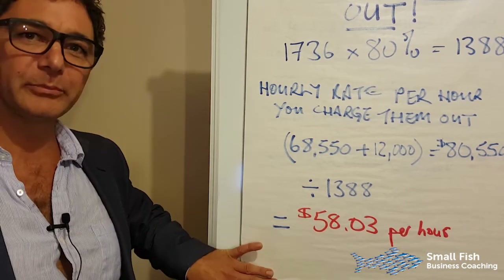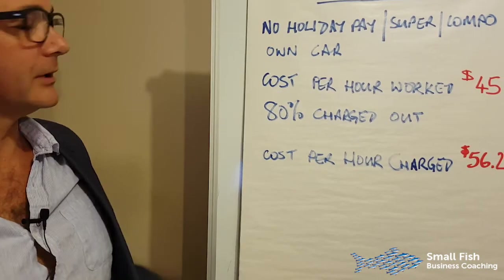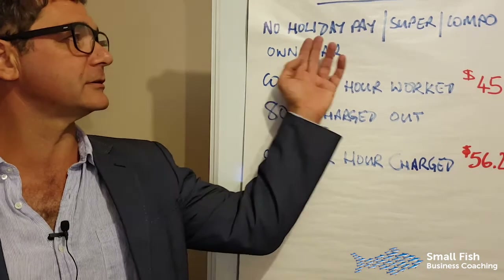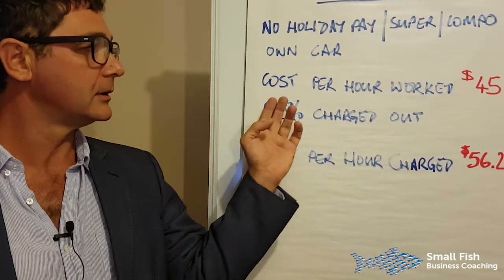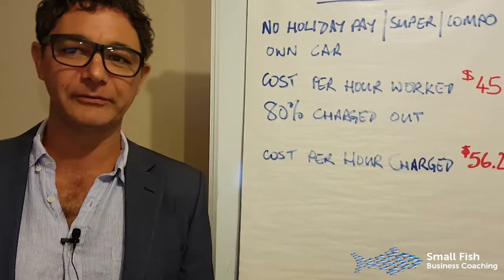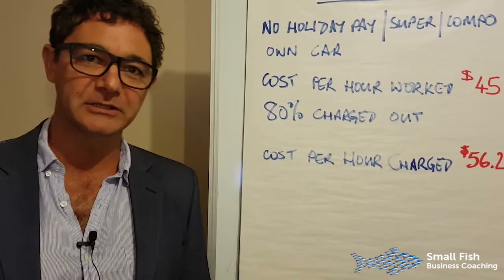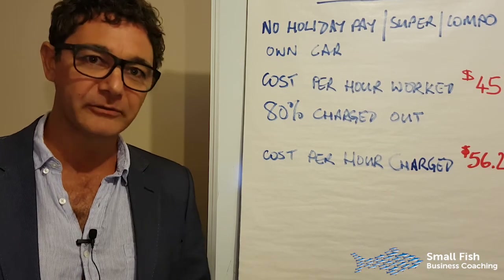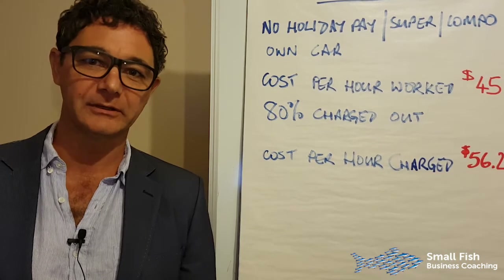Let me quickly run the same calculation for a contractor. I know you're all thinking you'll just put them on contract and avoid all that. But what happens is, while you don't have holiday pay, super, or compo to worry about and they can bring their own vehicle, they charge more per hour — and it kind of balances out. At $45 an hour for a contractor, with the same 80% charged-out rule, the cost per chargeable hour becomes $56.25 — almost the same.